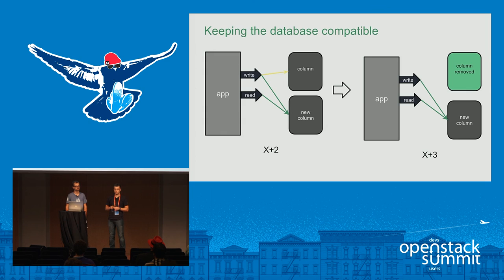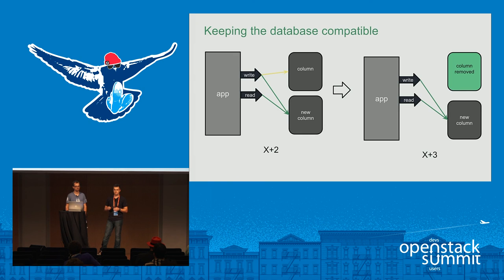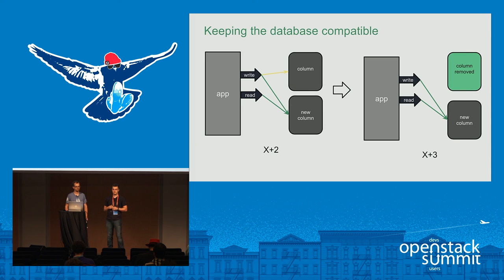The first moment you can remove the older column is in the X+3 release, because X+2 and X+3 are only using the new column for reading. So you can have up to four releases carrying the stale old schema version inside the database to maintain backward compatibility. This is because multiple servers running simultaneously serve the API and access the database, and must be compatible with the X-1 release. If there's only one access point to the database, you could do this in two releases — it depends on the project use case.